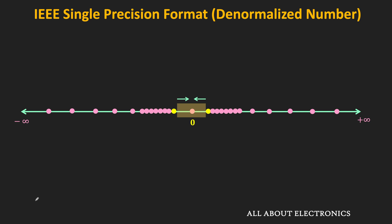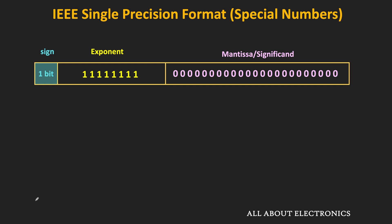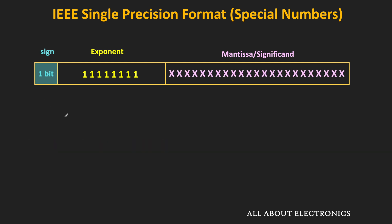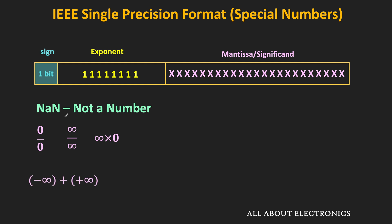Now let's see the special numbers when the exponent field is all 1s. Whenever the exponent field has all 1s and the mantissa part has all 0s, that represents infinity — either plus infinity or minus infinity depending on the sign bit. When the exponent field is all 1s and the mantissa field is non-zero, that represents NaN, where NaN stands for Not a Number. NaN is a special value used in floating-point arithmetic to represent results that are undefined or unrepresentable. For example, operations like 0×0, infinity divided by infinity, multiplication of infinity by 0, or addition/subtraction of plus infinity and minus infinity result in undefined results. Similarly, taking the square root of a negative number also results in NaN. All such arithmetic operations lead to a NaN result.